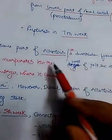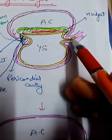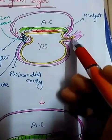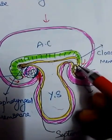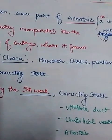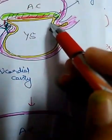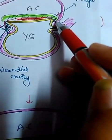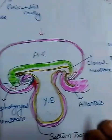The allantois is a diverticulum formed by the posterior wall of the yolk sac, extending into the connecting stalk. During folding, it gets partially incorporated into the hindgut, where it contributes to forming the cloaca, while the distal portion remains in the connecting stalk itself.